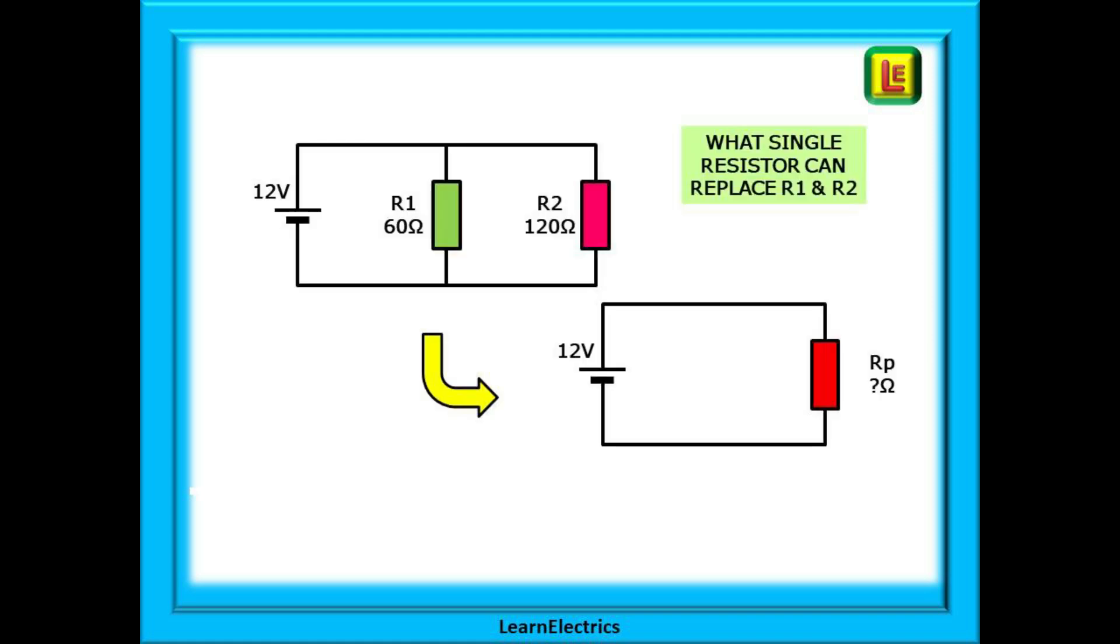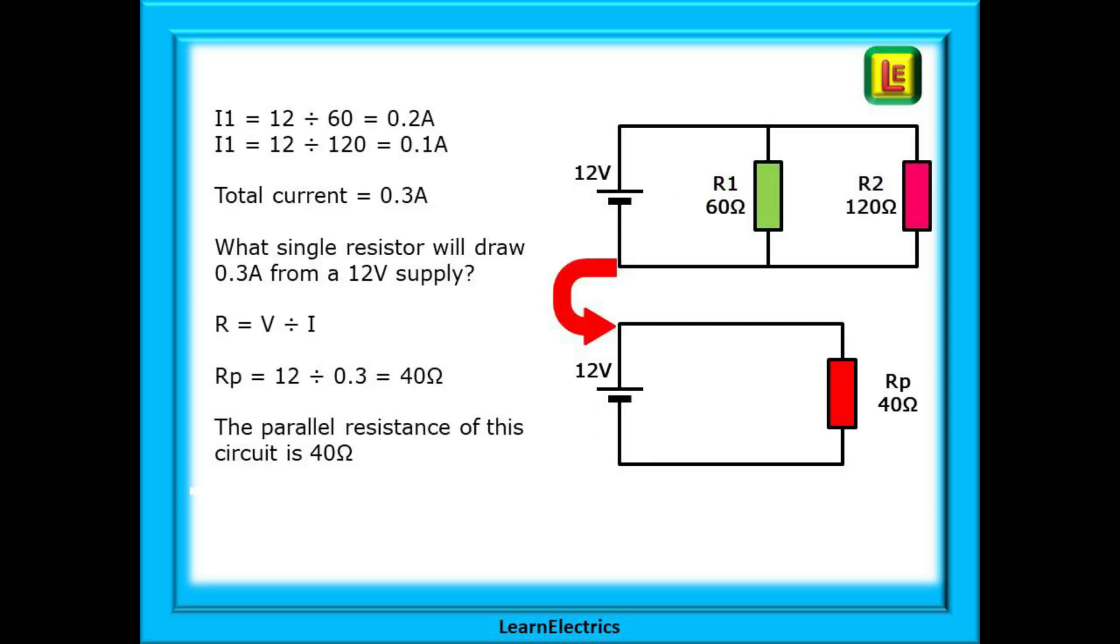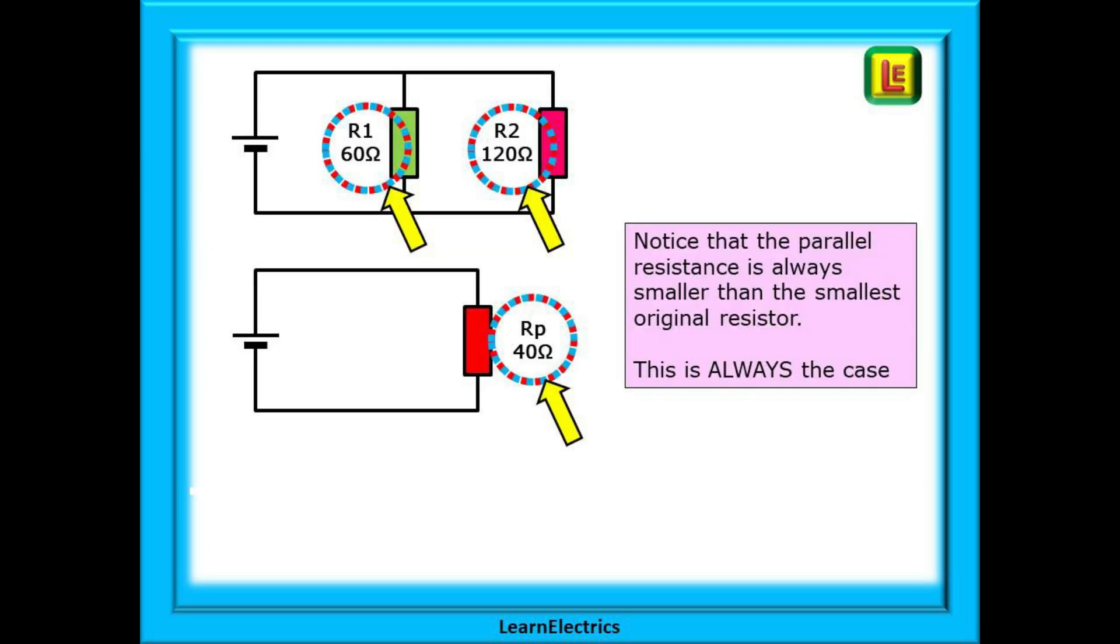Let's recap so far. What single resistor RP can replace the two resistors in this circuit? The method we have just used is from Ohm's law. The voltage divided by the resistance will give the current in each resistor. Then we can add the currents together and use Ohm's law again to calculate the new resistance. Shown here, we can replace the 60 ohm and 120 ohm resistors with just one resistor of 40 ohms. Notice that the parallel resistance is always smaller than the smallest of the original resistors. This is always the case.